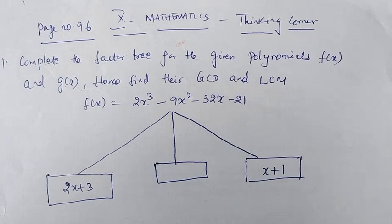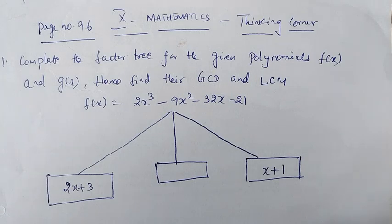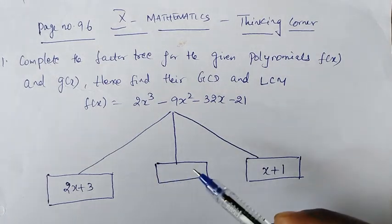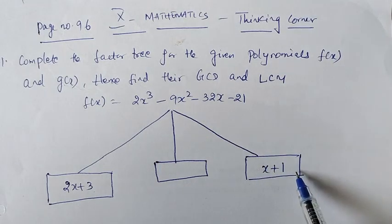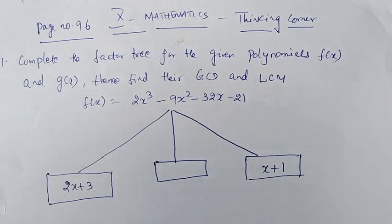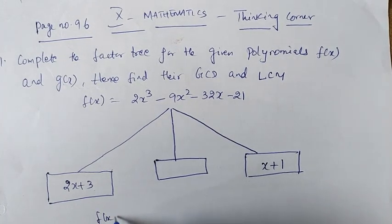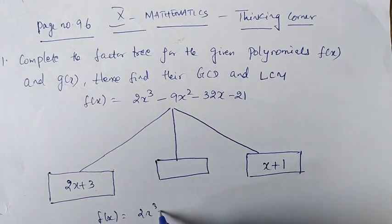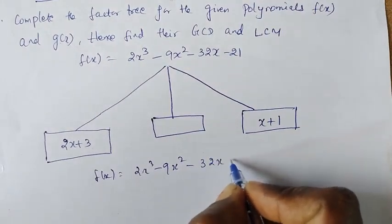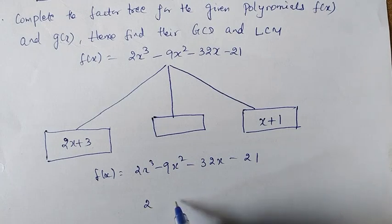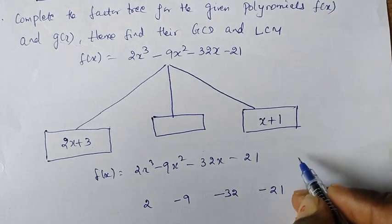We will work on F of x and G of x together. First is F of x, then we find G of x, and from both we will find the GCD. We build two trees using the factor tree method. F of x equals 2x cubed minus 9x squared minus 32x minus 21. Write down the coefficients: 2, minus 9, minus 32, minus 21.